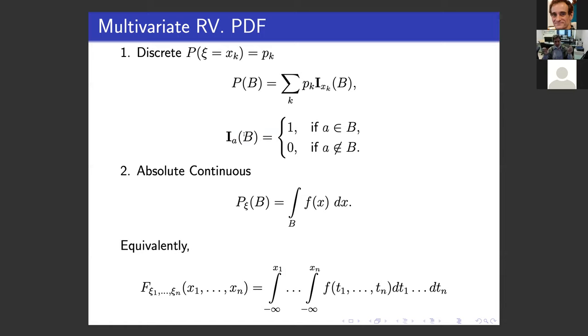This representation of the distribution sitting at one point is better in my opinion than the representation with the delta function, because the delta function is not actually a function — it's a functional.